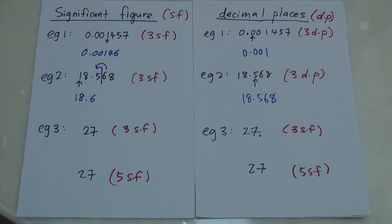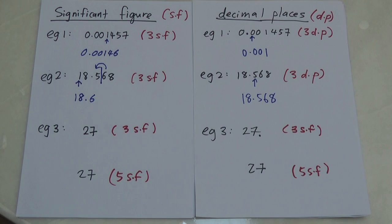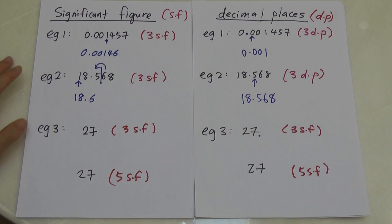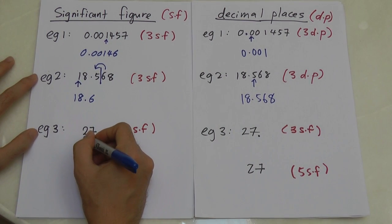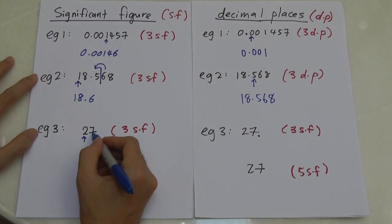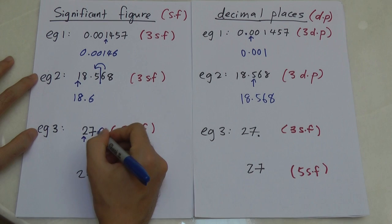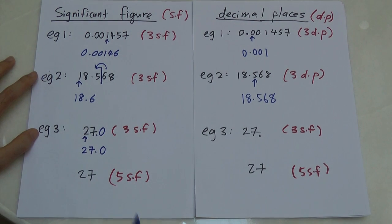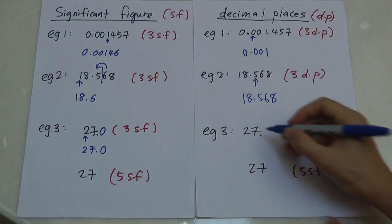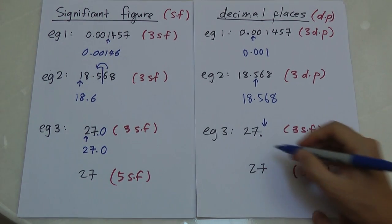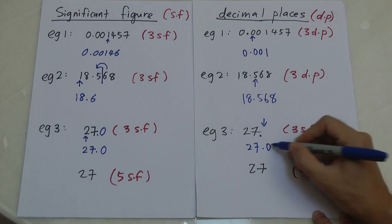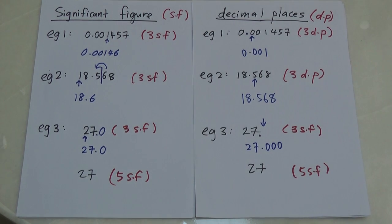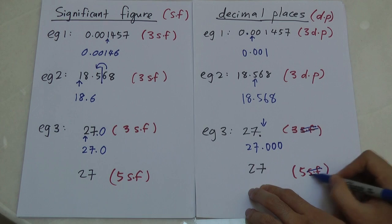Now, what happens with a whole number like 27? For three significant figures, we count 2 as the first and 7 as the second — that's only two, so we add a zero and a dot, giving 27.0. For three decimal places, we start from the dot and add three zeros, giving 27.000.